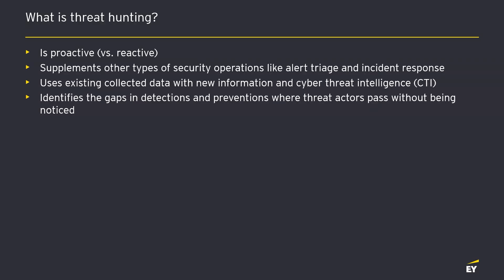A lot of these other processes, like alert triage, cover a lot of the known threats — here's a specific indicator, here's a specific signature, if we get this alert we know it's bad. But the threat intelligence changes; we find out about new information. Threat hunting with that proactive approach supplements all those other processes. And if you have excess capacity in incident response, you can use it to go out and proactively look for other areas. There are areas that alert and monitoring can't always cover, so threat hunting can supplement all of those efforts.